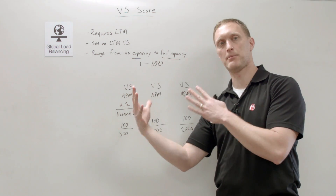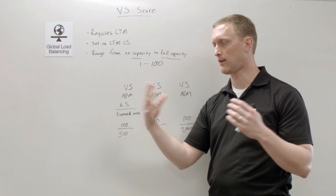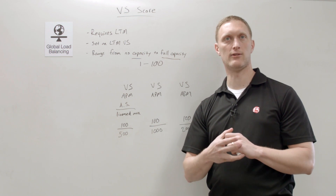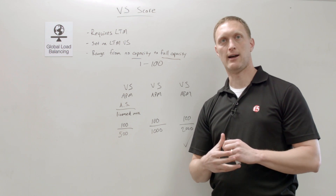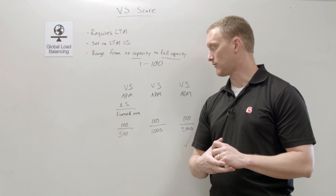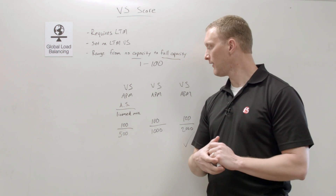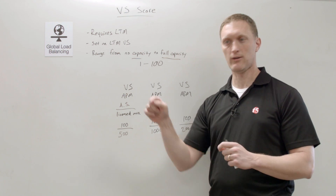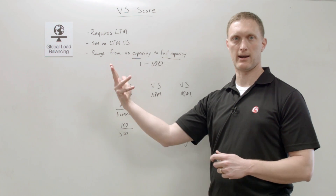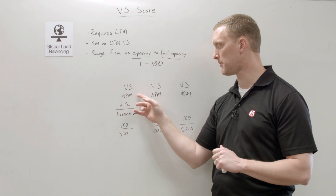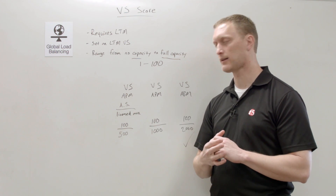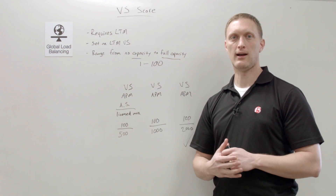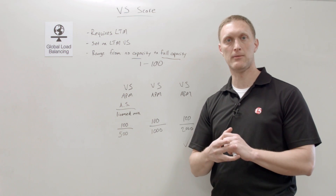Those are a couple of examples: the iCall script approach to calculate capacity, and the APM example using active sessions. By the way, with APM that's another dynamic setting — you don't have to configure it yourself. If APM is provisioned, it will automatically calculate and set the virtual server score for you.